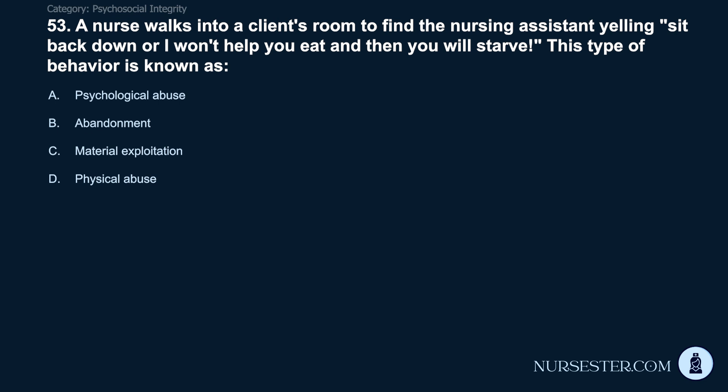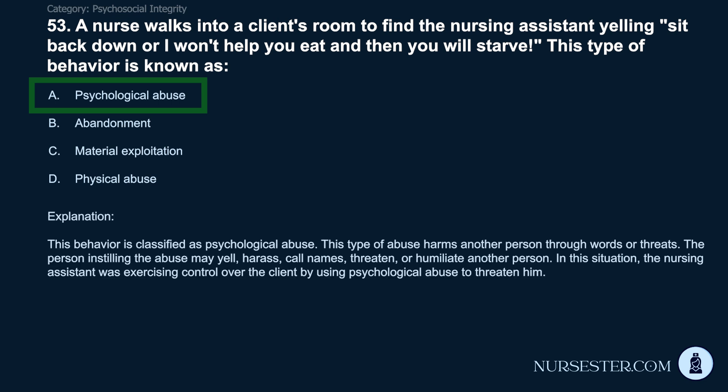Question 53: A nurse walks into a client's room to find the nursing assistant yelling, 'Sit back down or I won't help you eat and then you will starve.' This behavior is known as: A) Psychological abuse. B) Abandonment. C) Material exploitation. D) Physical abuse. Correct answer: A. Psychological abuse. This type of abuse harms another person through words or threats. The abuser may yell, harass, call names, threaten, or humiliate. In this situation, the nursing assistant was exercising control over the client through psychological threats.